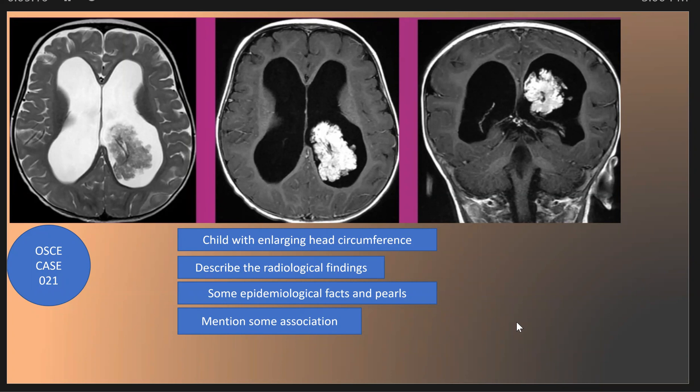Here, the Oski case number 21. As we see in this patient, this is a child patient who has an enlarging head circumference. What are the radiological findings of this patient?